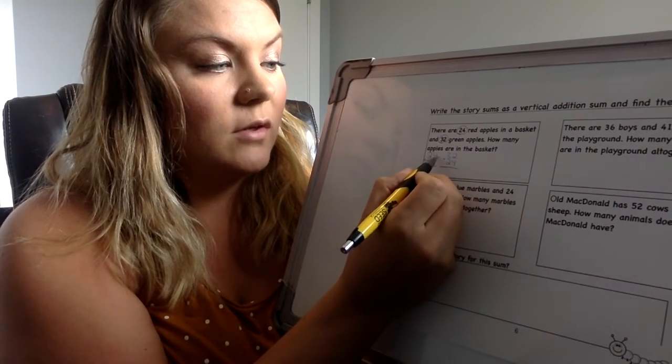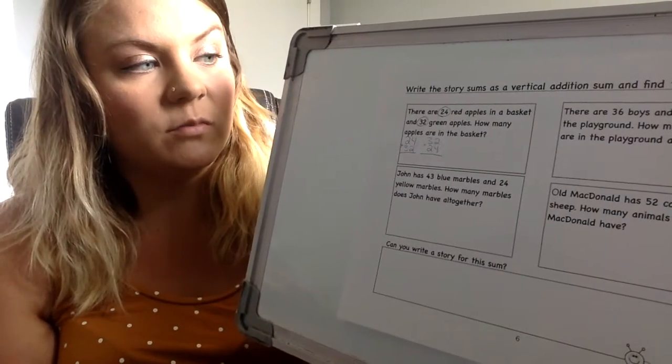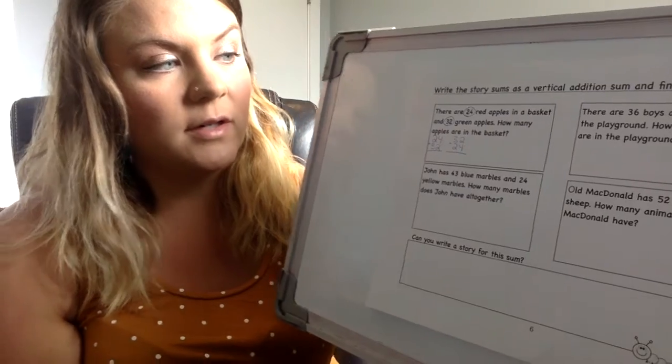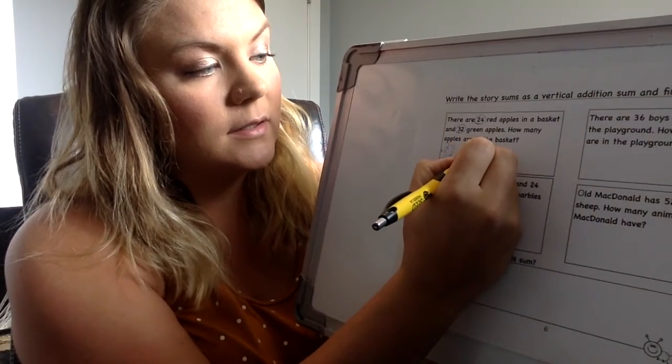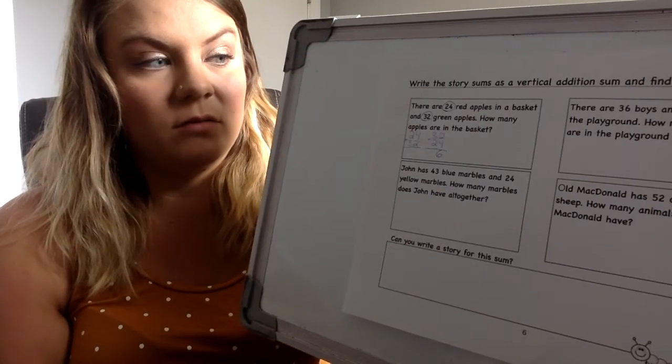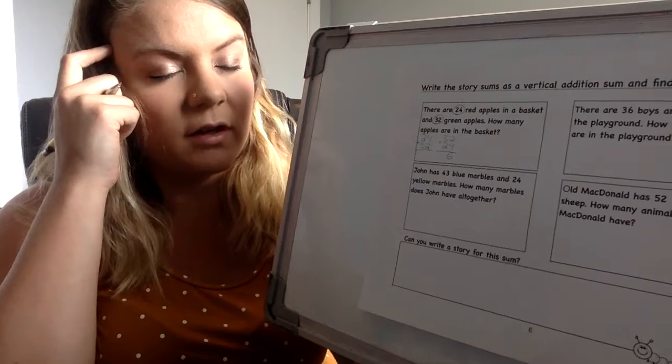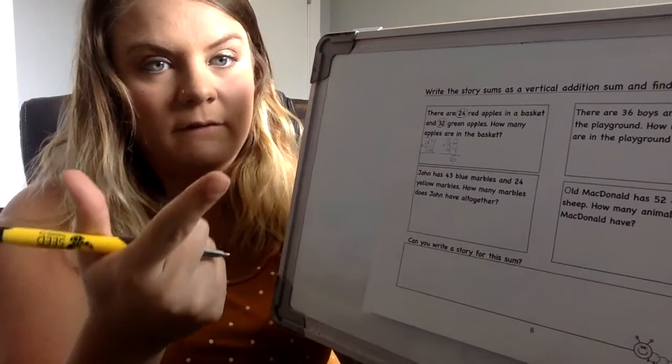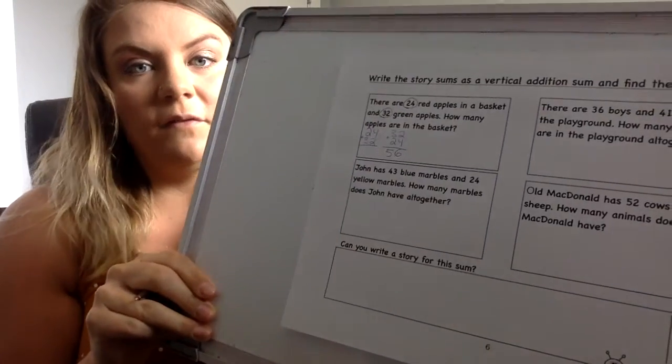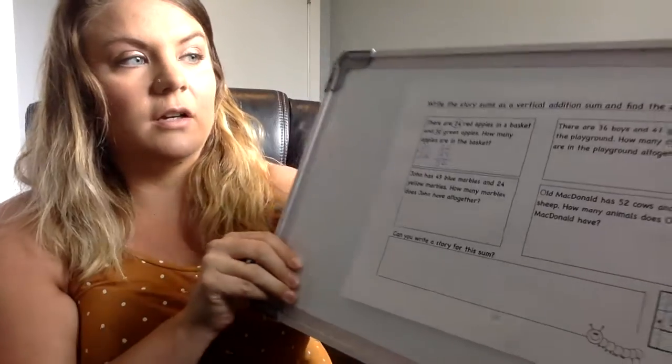So then let's start with the first one. So 2 plus 4, right, or 4 plus 2. What is 2 plus 4? We're starting in the ones position. 2 plus 4 is 6. And then we have 3 plus 2. If you need to use your counting, put three in your head. Four, five. So they have 56 apples in their basket.